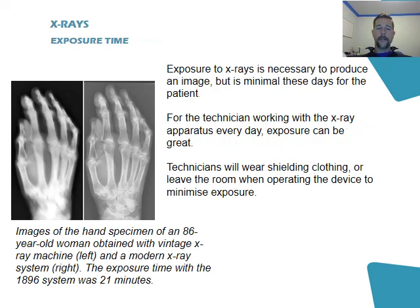The third factor that affects the quality of the image is exposure time. We have to be exposed to x-rays to produce an image, but if we're exposed for too great a time, damage may occur. Technicians working with x-rays usually use preventative equipment to stop their exposure being too great — for example, they might wear a shielded apron, or they may leave the room. This minimizes their exposure.